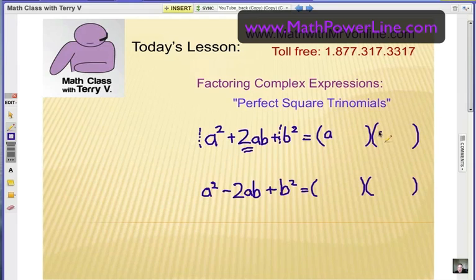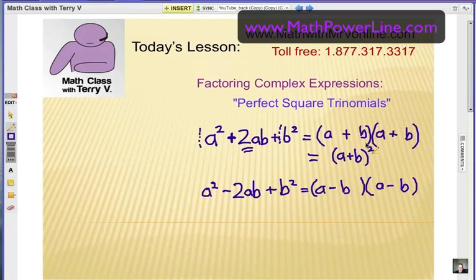Notice a and a, b and b, and then what we do is we match the middle term sign. So if this is a positive middle term, then both of these are going to be positive. Notice how the middle term here is negative, so it's going to be a minus b times a minus b. In these perfect square trinomials, when we factor them, both binomials are the same, so we actually can write it even simpler. This is considered the best final answer right here. Use the exponent. So it's a binomial square, that's how we factor it.